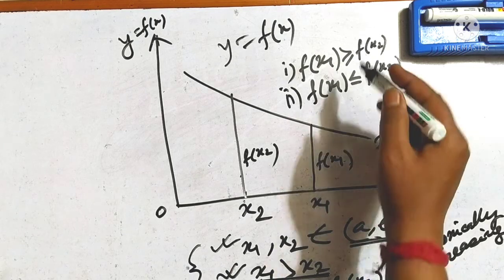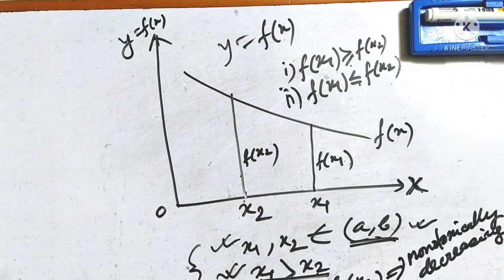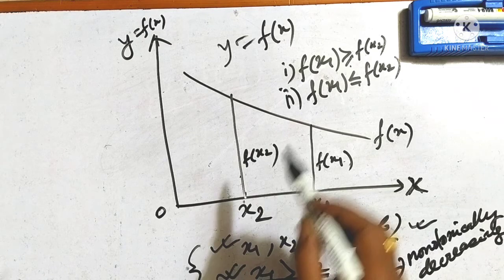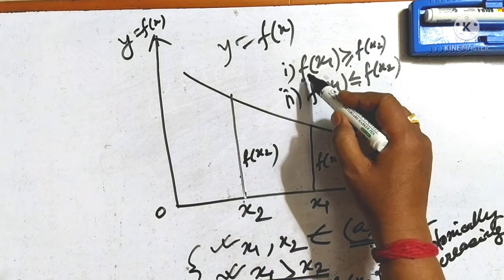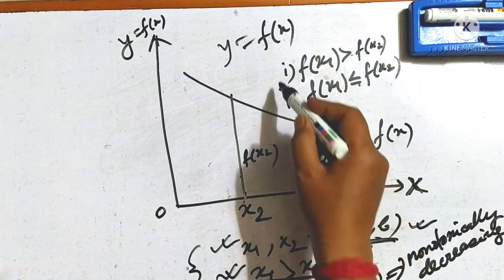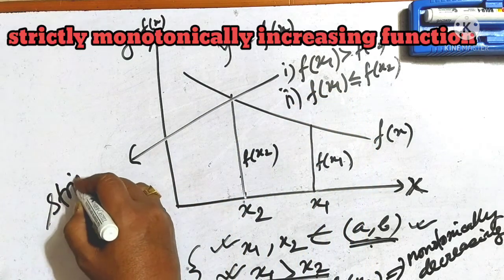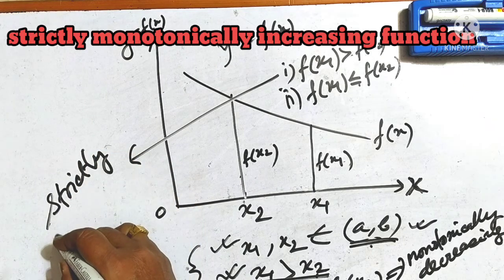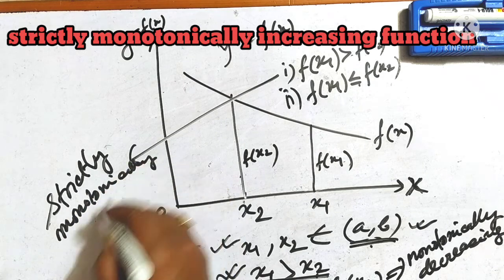But if the equals sign is removed — that is, if the condition remains the same with x1 greater than x2 and x1, x2 both belonging to the closed interval — and we find that fx1 is strictly greater than fx2, then we call it strictly monotonically increasing.